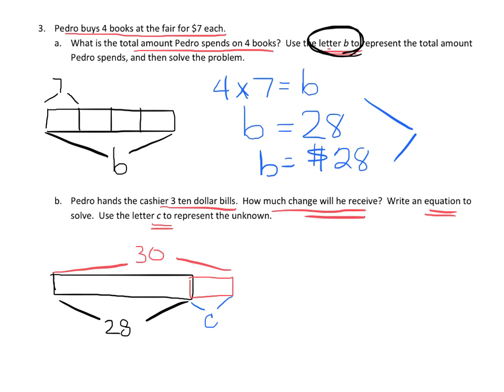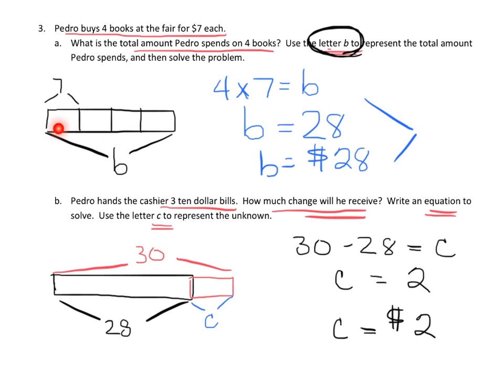And so the equation that I would write would be 30 minus 28, because this kind of looks like a part-part-whole diagram, equals C. And then C is equal to 2. And like I said earlier, I'm not sure if you're supposed to do the dollar sign or not, so I'm just going to write them both.